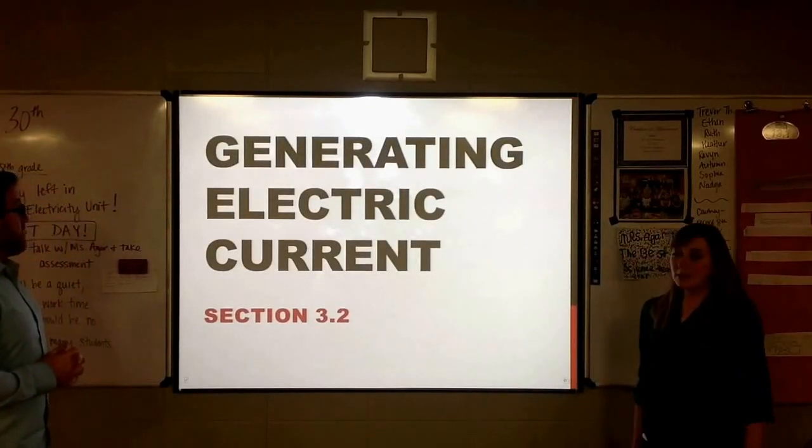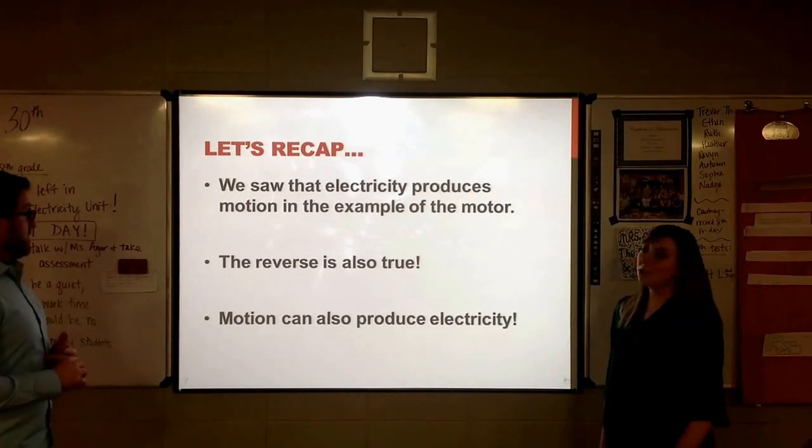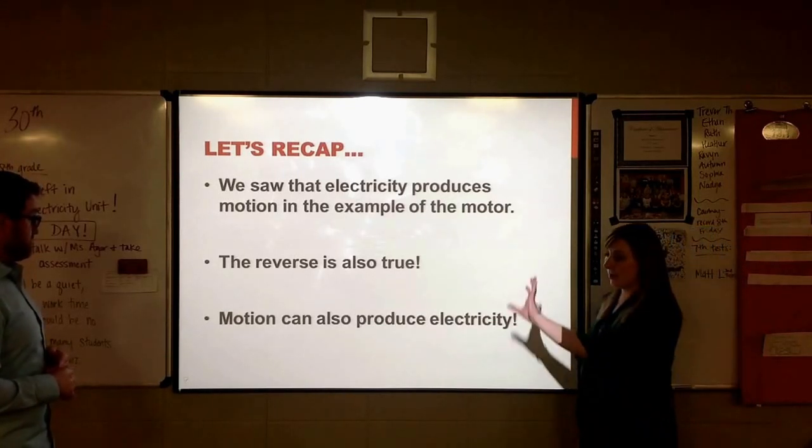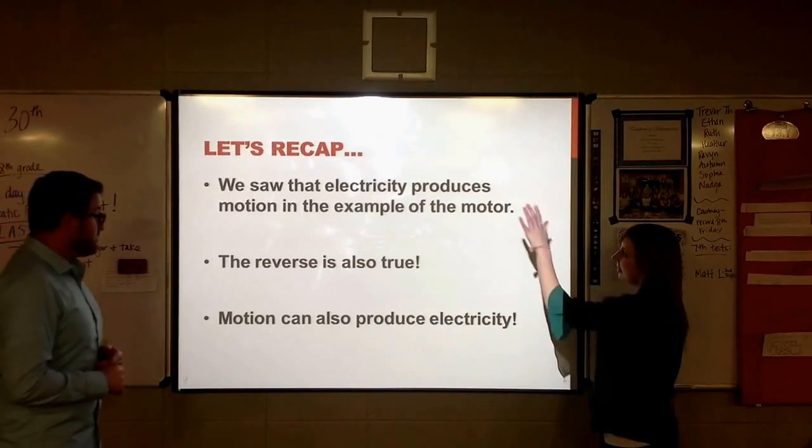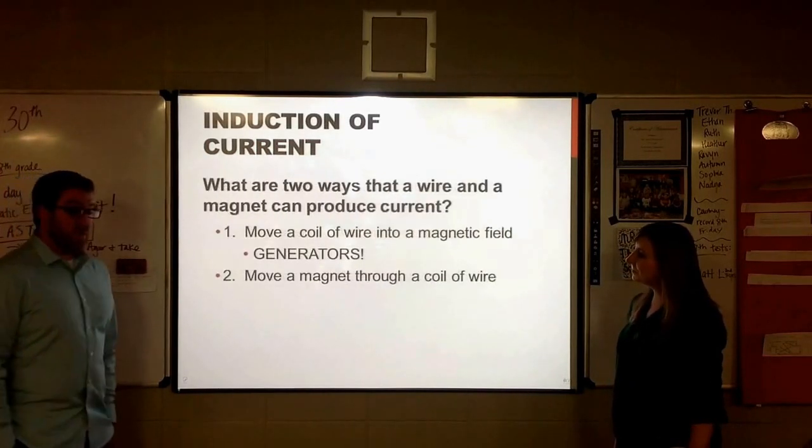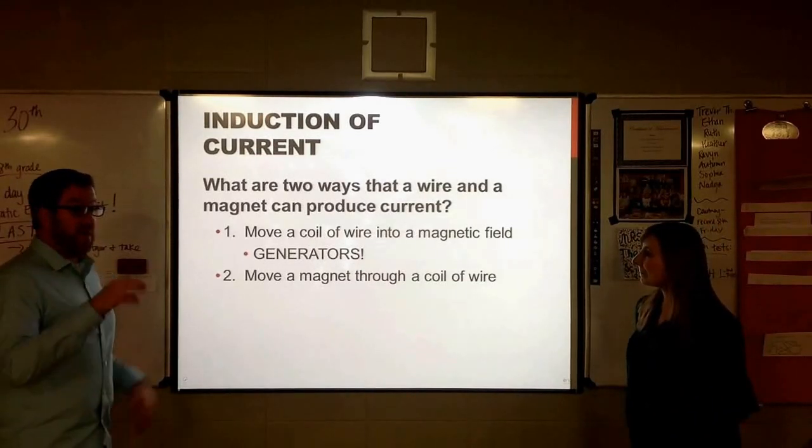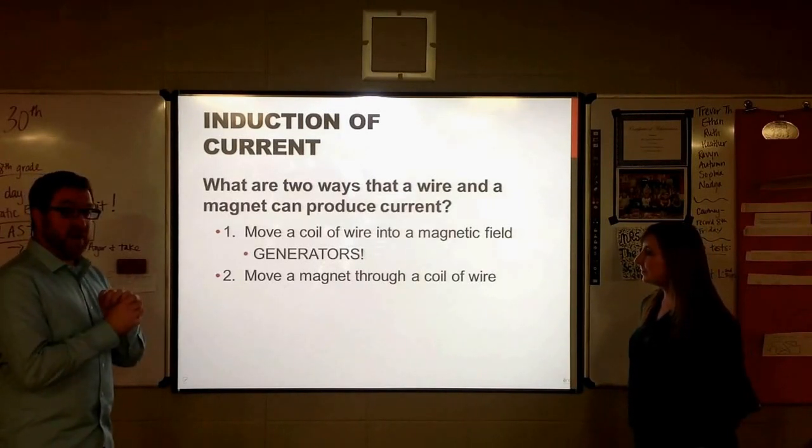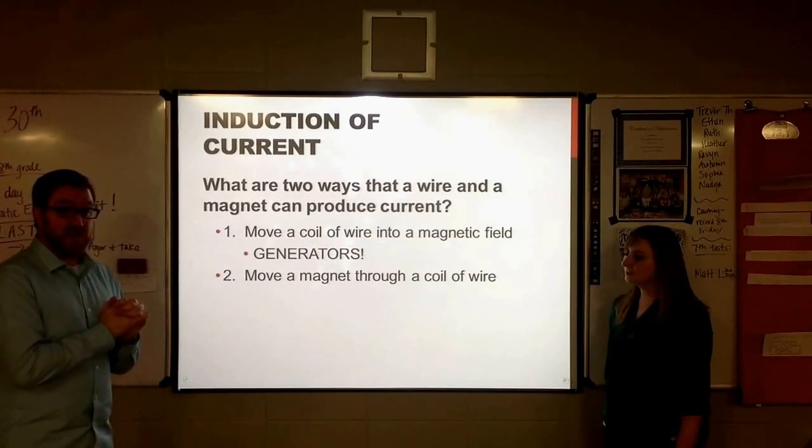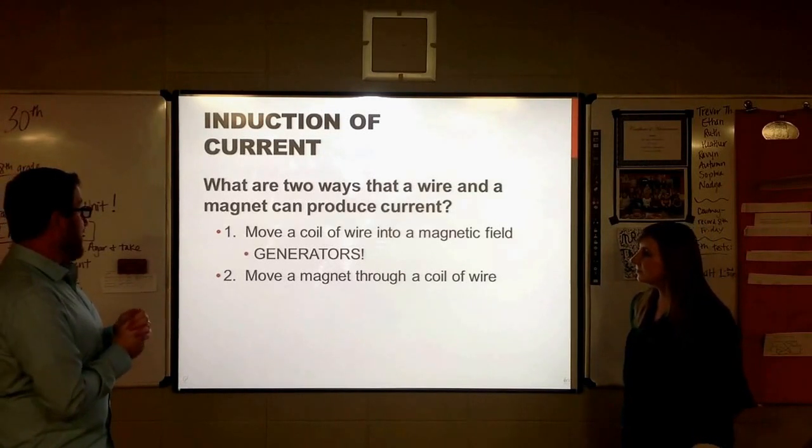All right, we are moving on to generating electric current. So, this is the second section of the chapter. And looking back, we just looked at how electricity produces motion in the example of a motor. And I'm here to tell you that the opposite is also true. So, not only can electricity produce motion, but motion can produce electricity. All right, and the way that happens is by inducing electricity or utilizing induction. So, by taking those electrons and getting them to move near each other, we can use, again, their dislike for one another to create some motion at the subatomic level with those electrons and get them to kind of run around.